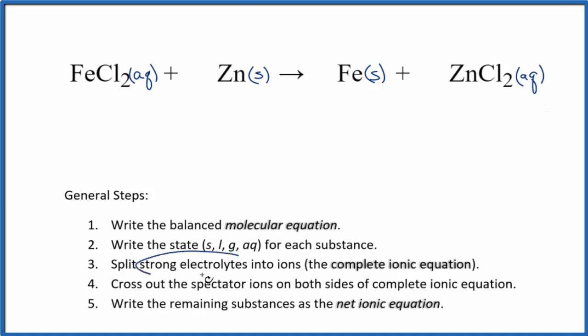Next, we can split the strong electrolytes into their ions for the complete ionic equation. We don't know the charge on iron just looking at it, but we do know the chloride ion is 1 minus. Since we have two of them, that's 2 minus, this has to be 2 plus. So we'll have our iron 2 ion, Fe2+.